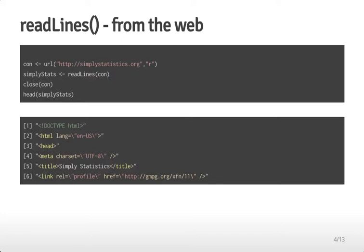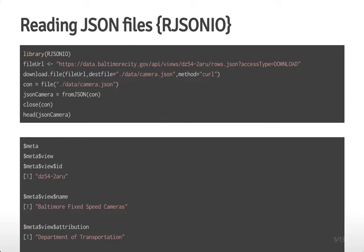Another way to read files — useful if you're dealing with a lot of JSON data — is the rjson.io package. A lot of data, particularly social networking data, is stored in JSON format. If you install and load the rjson.io package, you're able to access JSON data directly.